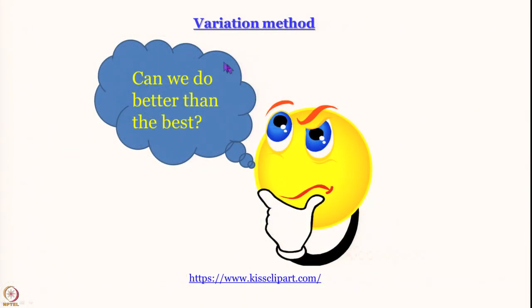In the next few classes we are going to talk about the variation method, which is a very powerful approximation method and goes way beyond the scope of perturbation theory. This variation method is completely based on what you see in the cartoon here — it is completely based on the fact that we cannot do better than the best. We are going to learn today something called the upper limit theorem, which says that no matter what you do in the variation method, the energy you calculate will be a little more than, or at best equal to, the ground state energy of a system.